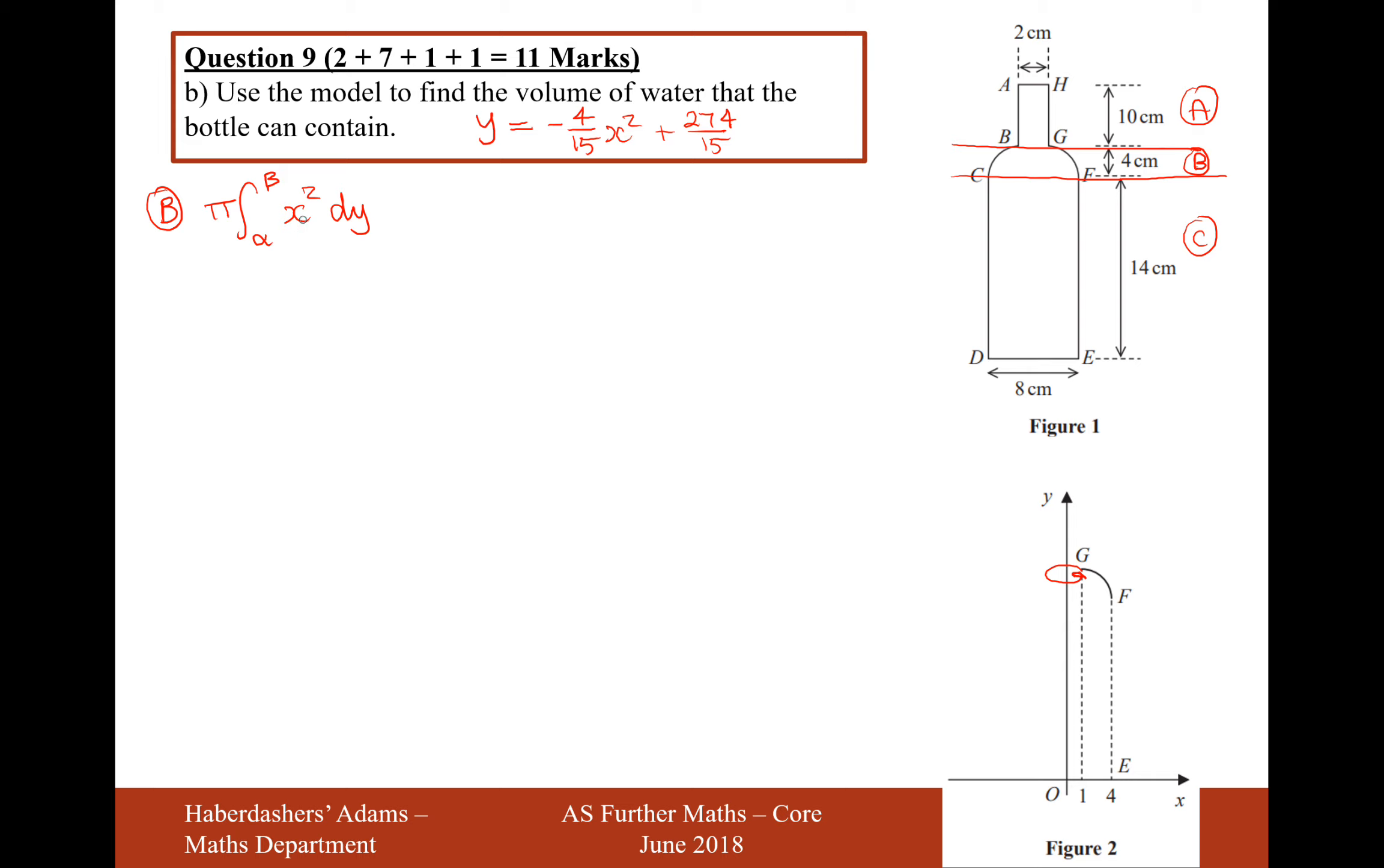Now, the first thing we probably want to do is work out what x squared is equal to, so let's rearrange what we've got up here. Let's times by 15 first, so it's going to be 15y minus 4x squared plus 274. Let's rearrange it to put the 4x squared on the left-hand side, so 4x squared equals 274 minus 15y. And we'll then divide by 4, so it's going to be 274 minus 15y divided by 4.